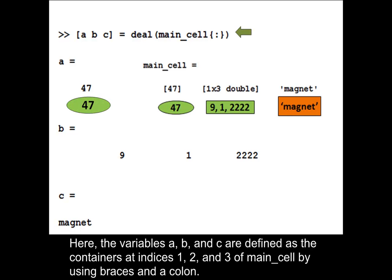Here the variables a, b, and c are defined as the containers at indices 1, 2, and 3 of main_cell by using braces and a colon.